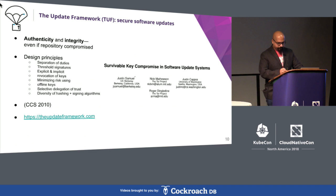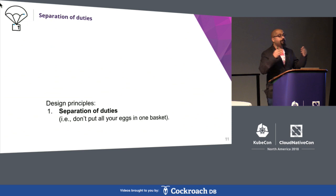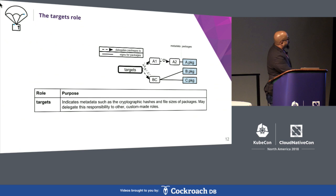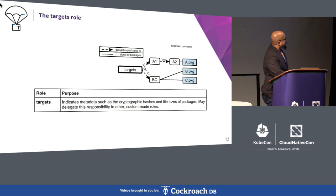First, different types of metadata are signed by different roles using different keys, so the impact of a key compromise is minimized and does not necessarily affect the security of the whole system. There are four top-level roles controlled by administrators. The targets role provides metadata about packages themselves. Administrators may delegate the responsibility of signing packages to other developers, who may in turn delegate to yet others. Delegations bind packages to public keys and serve as a natural way to distribute, revoke, and replace keys.